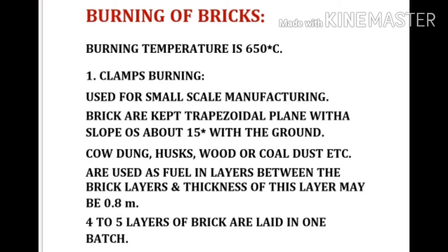Burning of bricks: Proper temperature should be maintained during burning to get a strong and dense brick — 650 to 1100 degrees centigrade. Clamp burning is used for small scale manufacturing. Bricks are kept in a trapezoidal arrangement with a slope of about 15 degrees with the ground. Cow dung, husk, wood, or coal are used as fuel. Bricks are laid in layers with fuel filled in between, and four to five layers of bricks are laid in one batch.